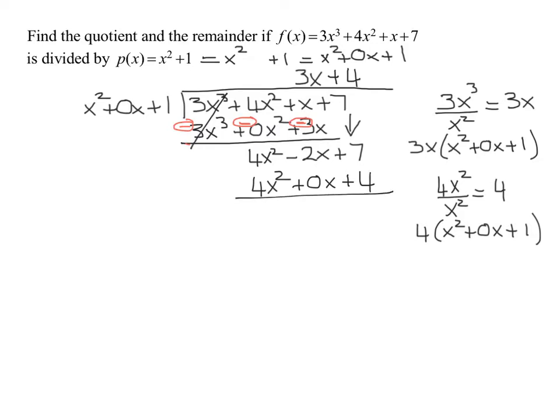And now change the signs and add. So this is going to become negative, negative, negative. And now 4x squared minus 4x squared. Those add up to 0. Negative 2x minus 0x is negative 2x. And lastly, 7 minus 4 is plus 3.